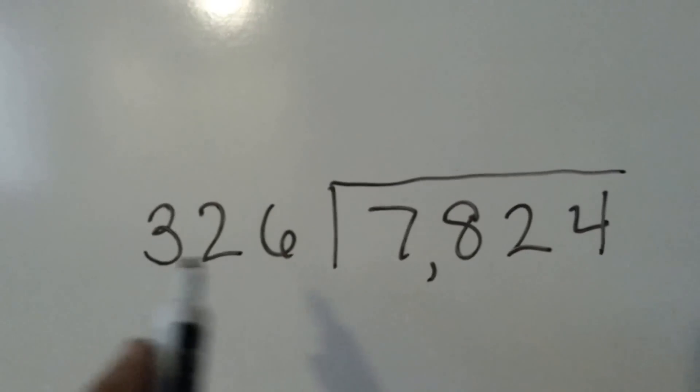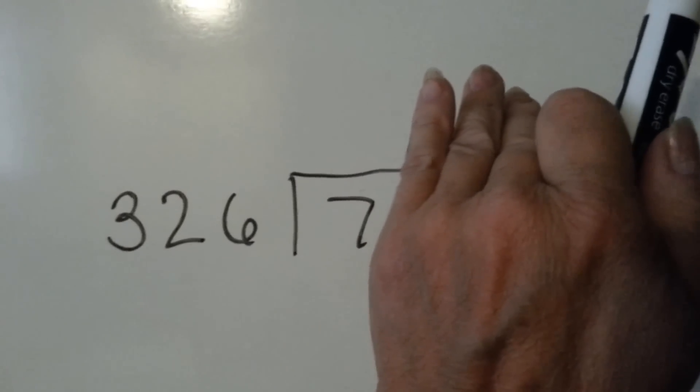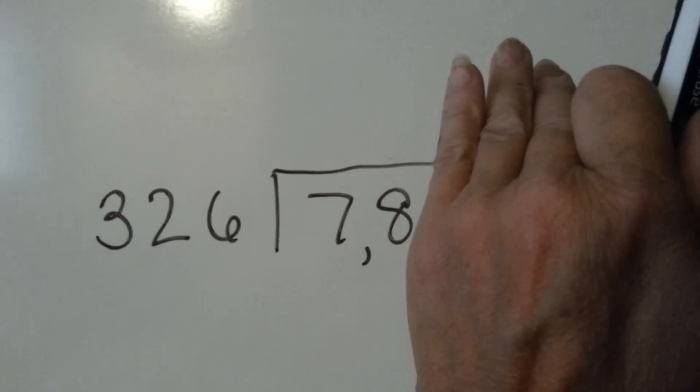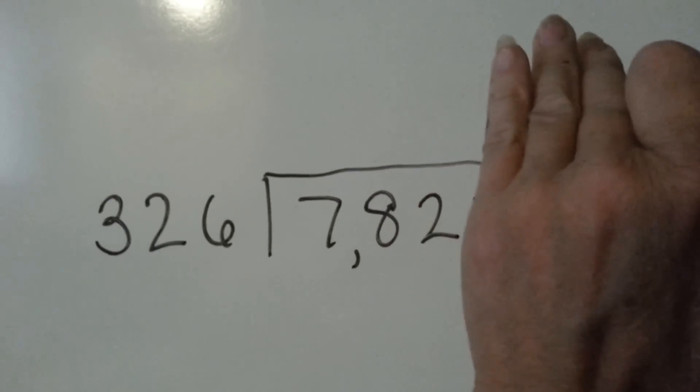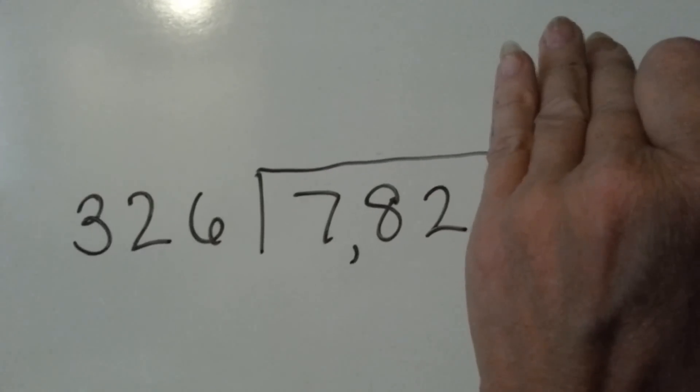We ask ourselves if 326 can go into seven. Of course not. Can it go into 78? No way. Can it go into 782? Yes, it will.